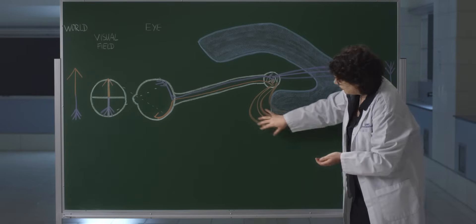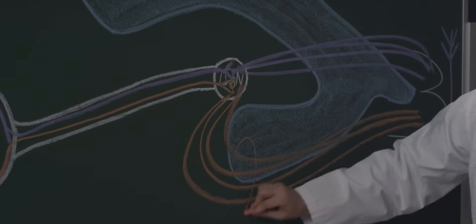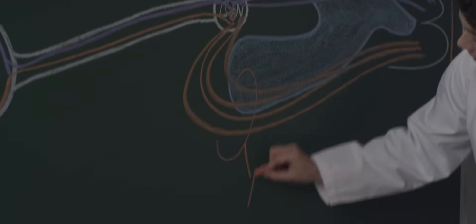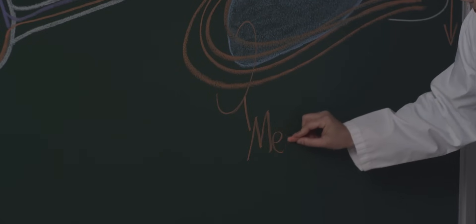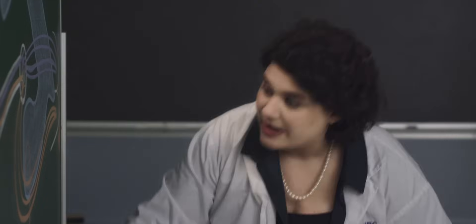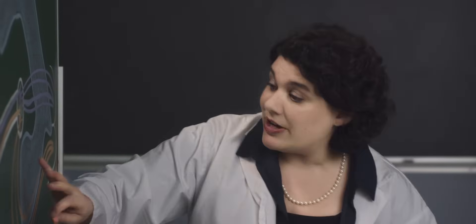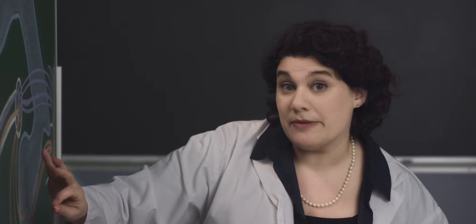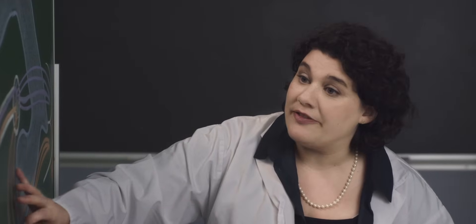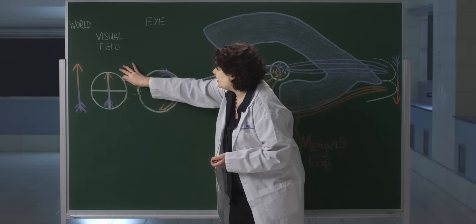This part, where the fibers swing around the inferior horn of the lateral ventricle, is called Meyer's loop. This is important clinically because a lesion in the temporal lobe can lead to a visual field deficit in the upper visual field.